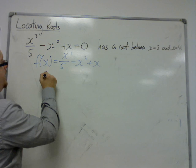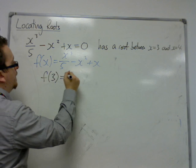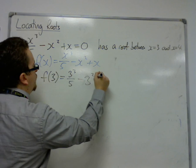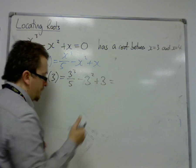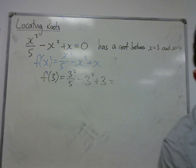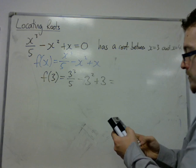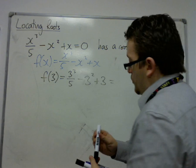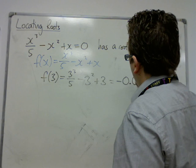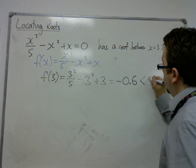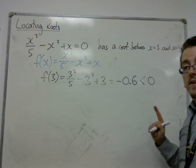We're looking at where does the cubic intersect the x-axis, where is it 0, where are its roots. We want to show that it has a root between x is 3 and x is 4. In this case, our function is this x cubed over 5 minus x squared plus x. And if I calculate f of 3, then that's 3 cubed over 5 take away 3 squared plus 3. So that's minus 0.6, which you need to really identify is less than 0.